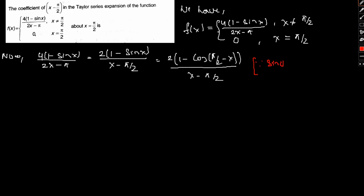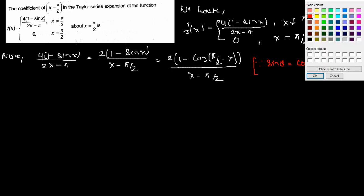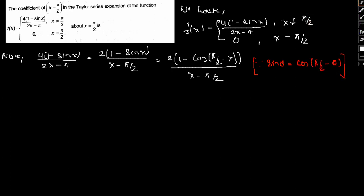Since sin θ = cos(π/2 - θ), we actually arrive at this particular conclusion. This can be further written as 2 / (x - π/2) times (1 - cos(π/2 - x)).